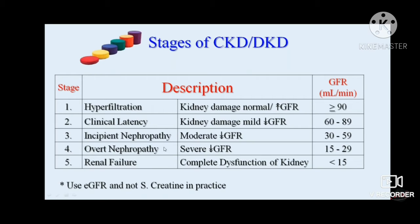That is how we stage diabetic kidney disease or chronic kidney disease. We should know the difference between diabetic kidney disease (DKD) and non-diabetic kidney disease, as even in a patient with diabetes, kidney disease can occur due to a non-diabetic cause. In DKD, proteinuria is generally gradual, whereas in non-DKD the proteinuria can be rapid.